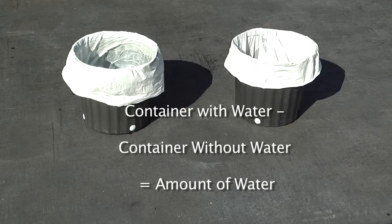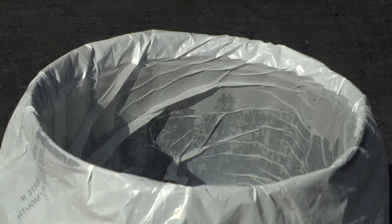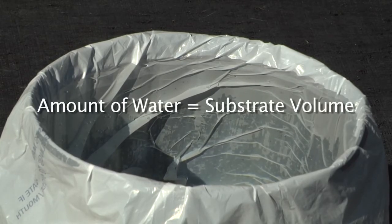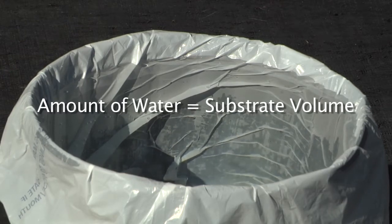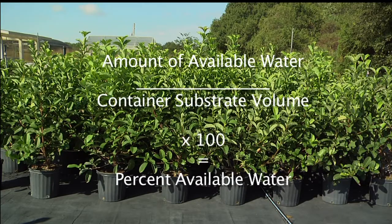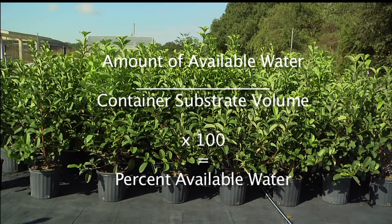Subtract the weight of each empty container from the weight of each container with water. Average the weights to obtain the amount of water in the containers. The amount of water in the containers is equal to the substrate volume because one gram of water equals one milliliter. Now you can determine the percent plant available water by taking the amount of available water, dividing by the container substrate volume, and multiplying by 100.